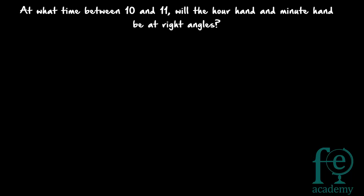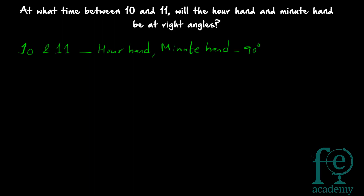Hi friends, welcome to today's class. Today's question is: at what time between 10 and 11 will the hour hand and minute hand be at right angles? You have to find out at what time between 10 and 11 the hour hand and minute hand will be at right angles — meaning the angle between them will be 90 degrees.